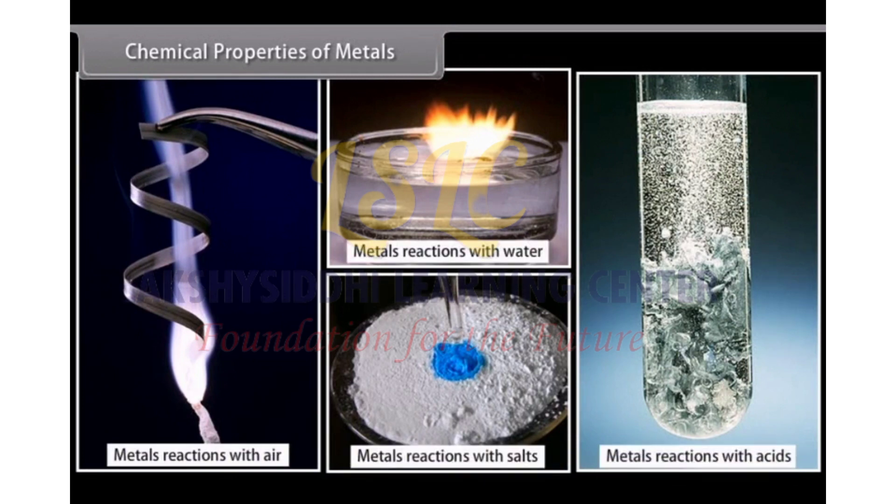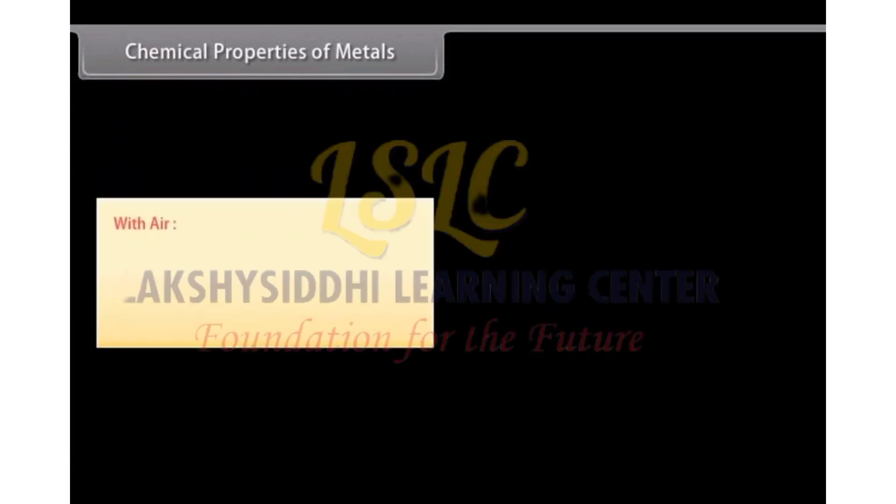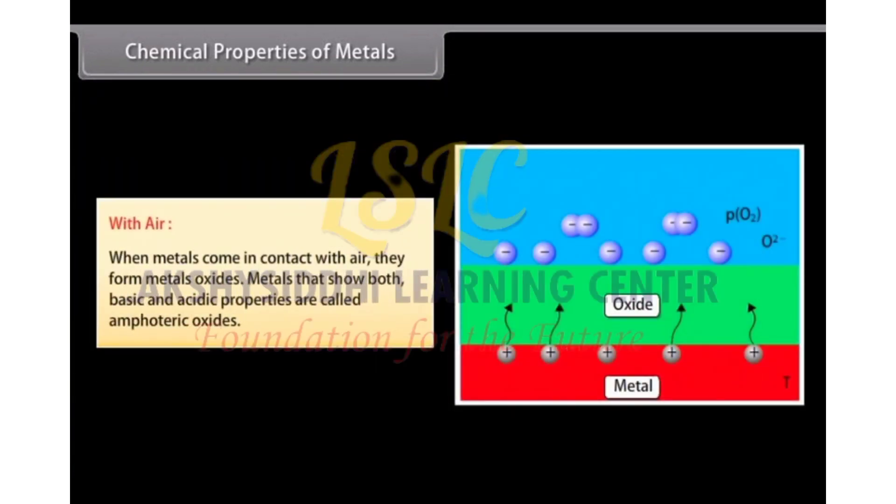acids and other metal salts. Metals with air: When metals come in contact with air, they form metal oxides. There are some metals that show both basic and acidic properties. Such metals are called amphoteric oxides.